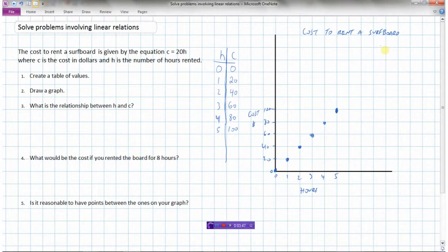Now, what's the relationship between H and C? I like to get that from my table of values. So it looks like every time H goes up by 1, cost goes up by 20. So in other words, it's $20 per hour to rent this surfboard. And every hour you rent, the cost goes up by 20. So I'm going to write, as the number of hours increases by 1, the cost increases by 20.